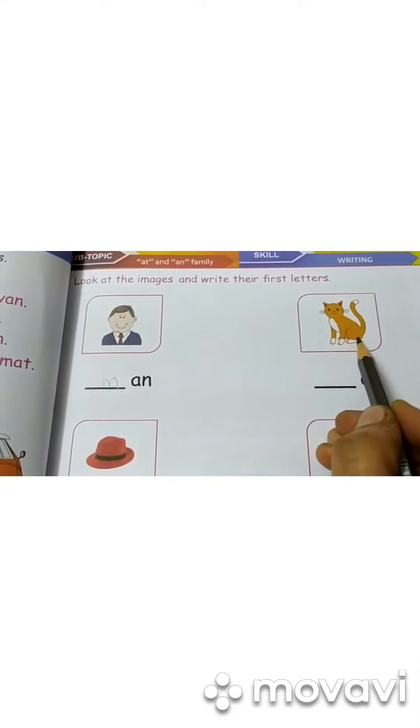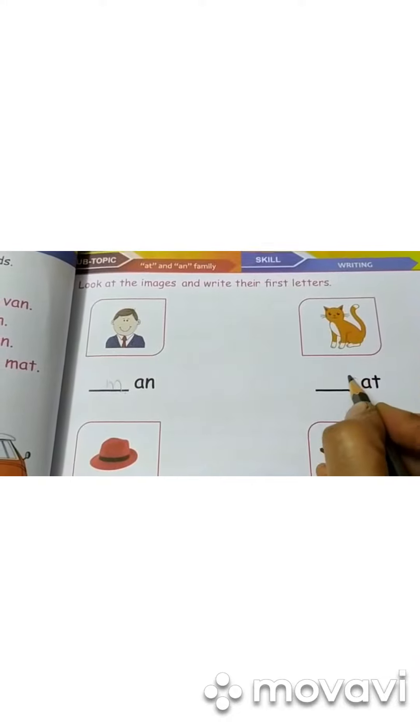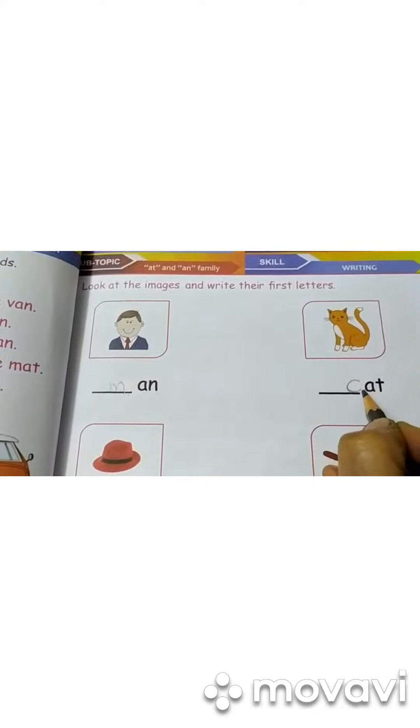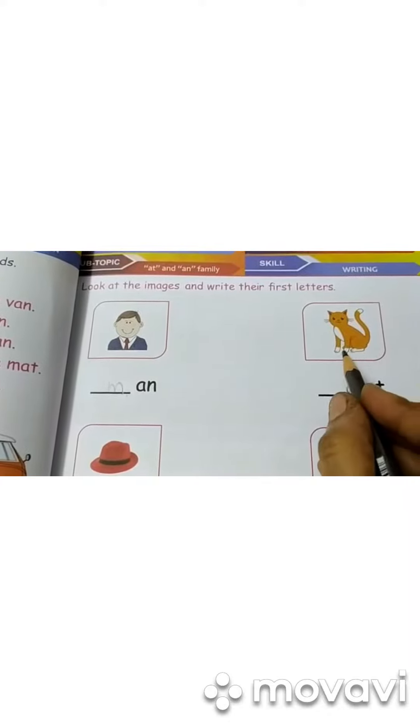This is cat. So children, write here. C-A-T. C-A-T. Cat. Cat means Billy.